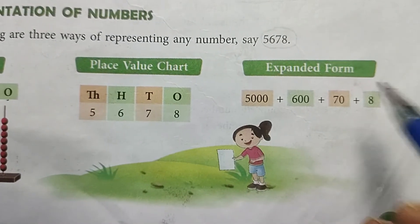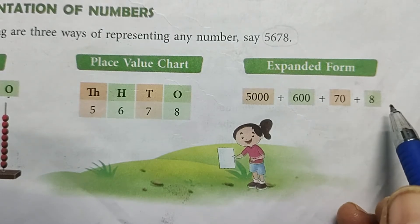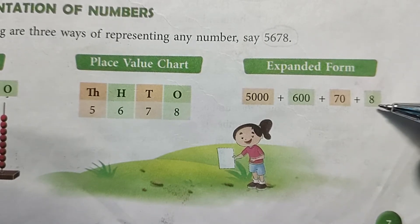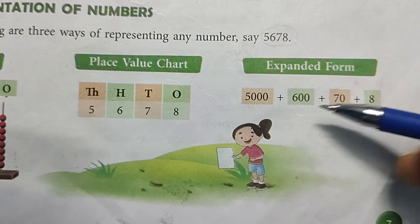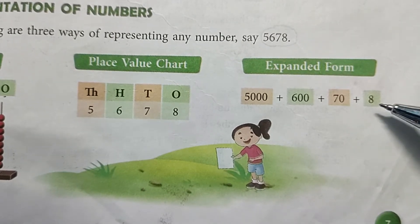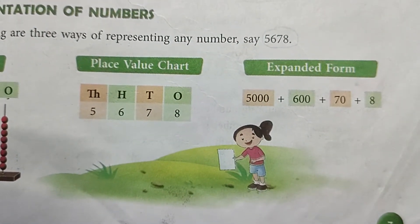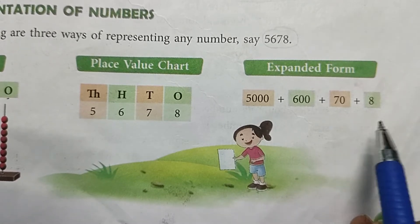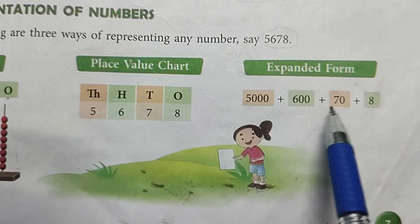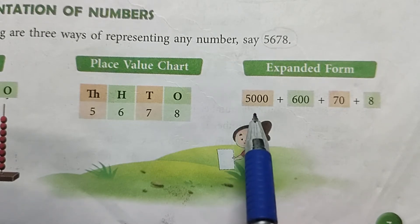Expanded form: जो number जिस place पर है उसकी value उसी के according होती है। एक ही number अगर अलग-अलग place पर है तो उसकी value अलग-अलग हो जाएगी। For example, 8 अगर ones की place पर है तो 8, tens की place पर है तो 80, hundreds की place पर है तो 800, और thousands की place पर है तो 8000।